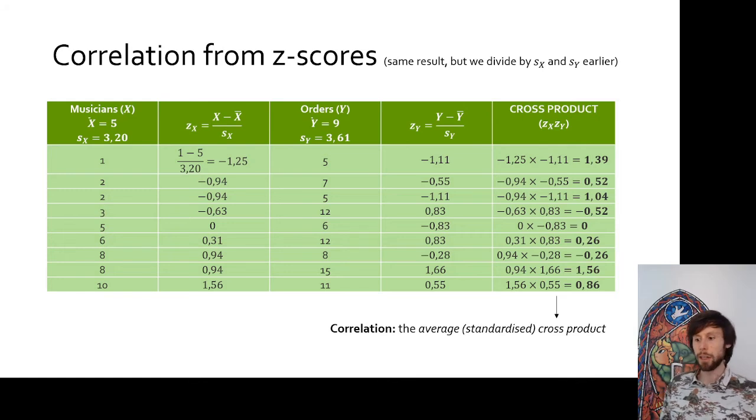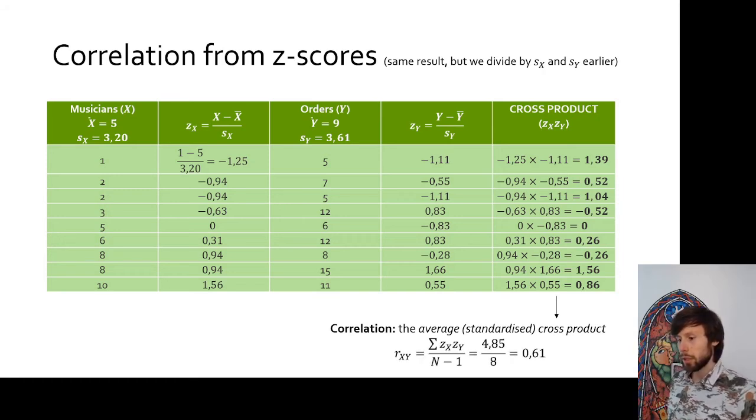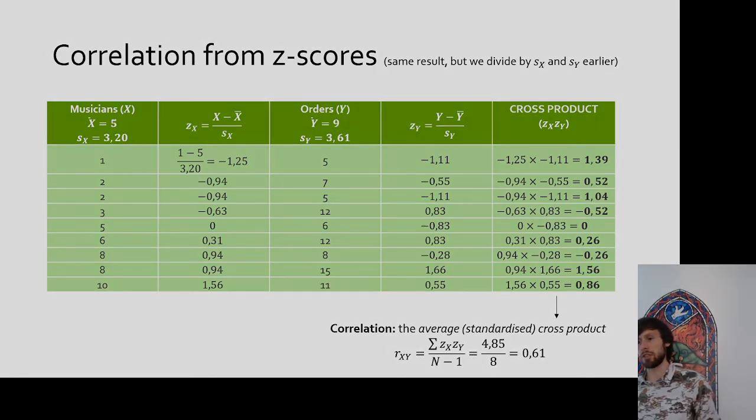And what is the correlation then? The correlation is then nothing else than the average of those cross products. They are already standardized. You already based them on z-scores. So the only thing you have to do is average the standardized cross products out. Like this. So you add up the cross products on the basis of the z-scores. You divide them by the total sample size, minus one. Again, the small correction. And look at that. The result is again 0.61.